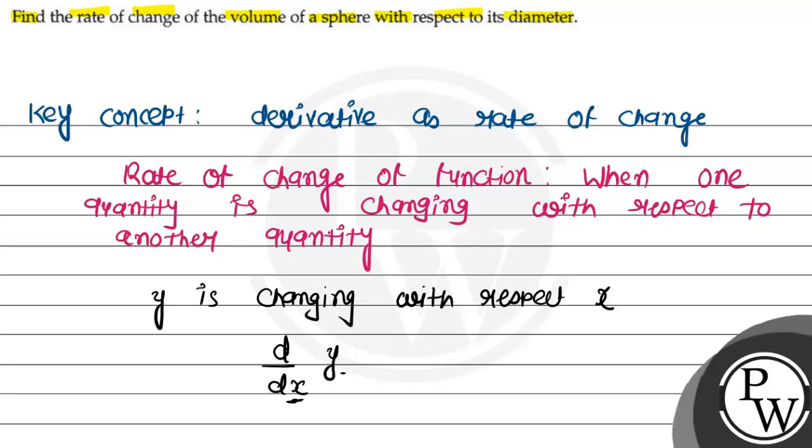So y is changeable with respect to x. This is known as rate of change. To find the rate of change, we need to take the derivative of the function. Here we are given volume of sphere with respect to diameter.